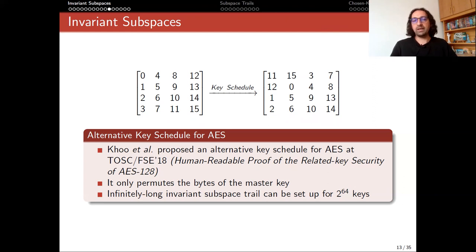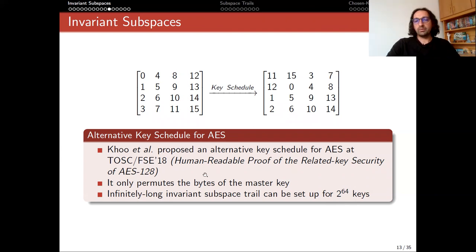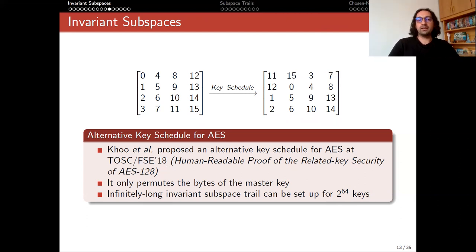In literature, many alternative key schedules have been suggested for AES. For instance, from a recent 2018 study — the paper 'Human-Readable Proof of the Related-Key Security of AES-128' — the authors proposed an alternative key schedule for AES. The paper was not primarily about this, but at some point they stated that even if we modify the key schedule, the security of AES against related-key attacks would be the same. Their alternative key schedule was really simple.